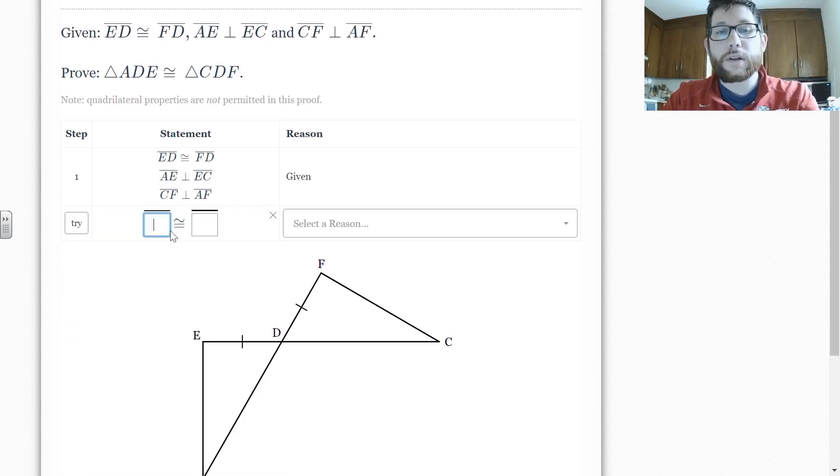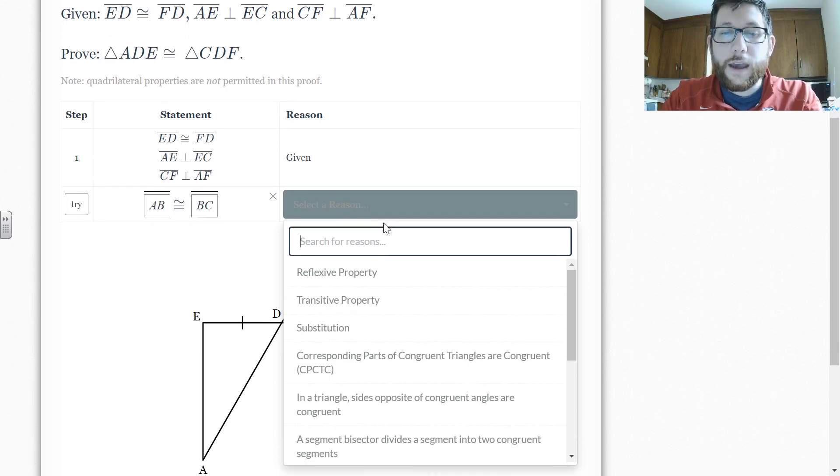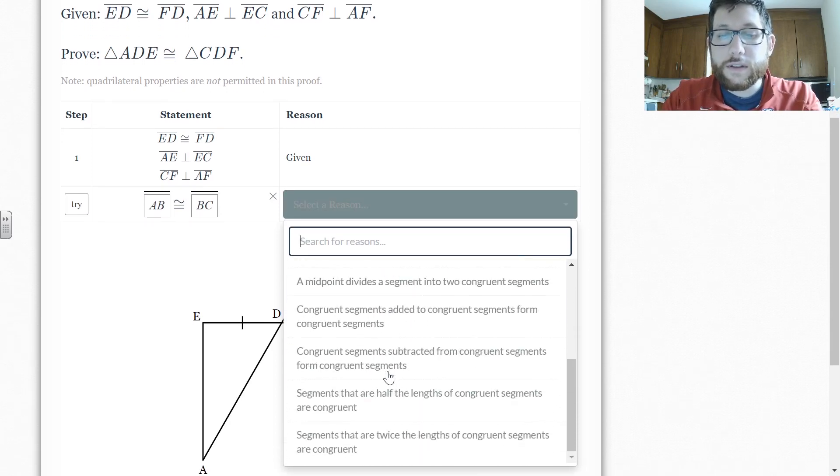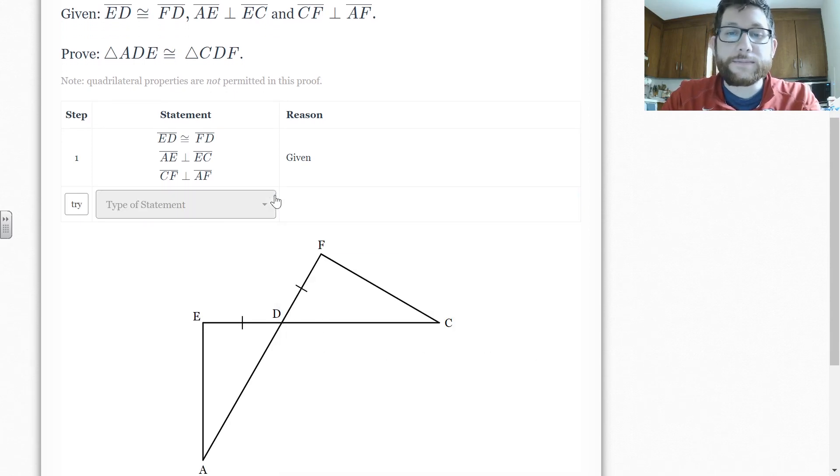So like in this case, say you want to say some sides are equal, you click that. You type in, you know, AB and BC, obviously not correct for this particular proof. And then you choose your reasons for saying that they are correct.